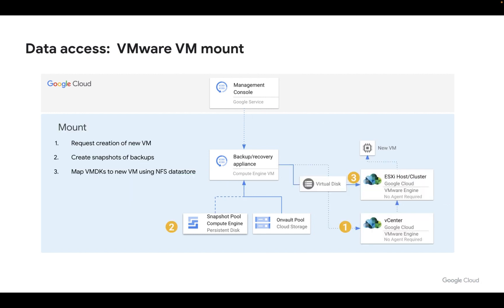We have three ways of accessing our backups. The most common method is to do what we call a mount. A mount effectively creates a virtual copy of an existing backup, then presents that virtual copy to the ESXi host over NFS, generating a brand new VM. We can also mount backups to existing VMs to access them.